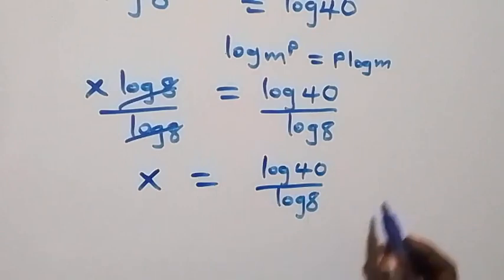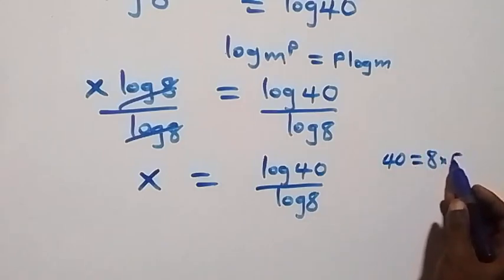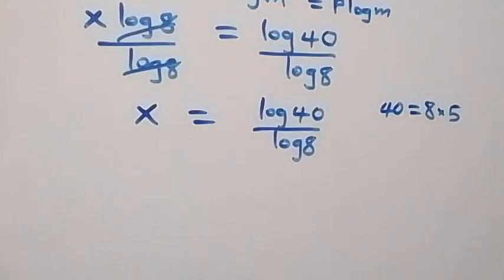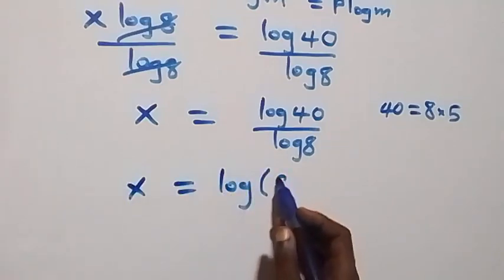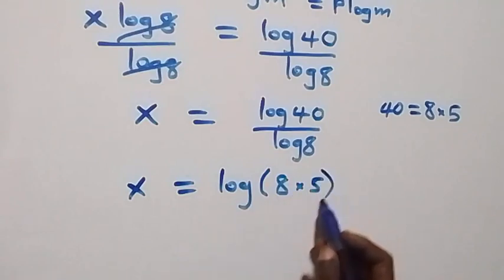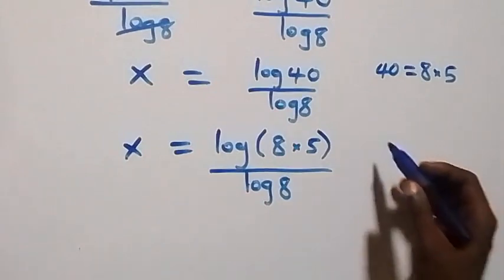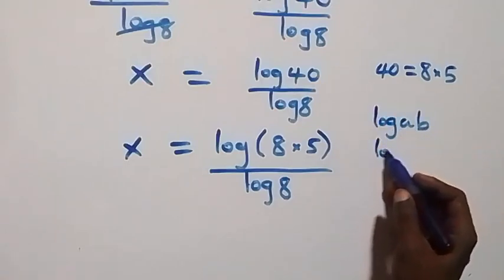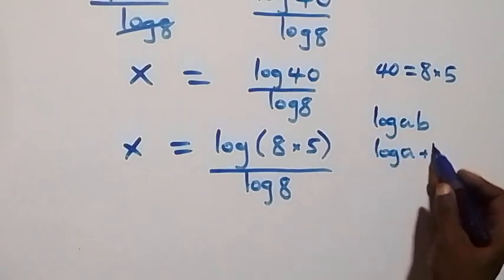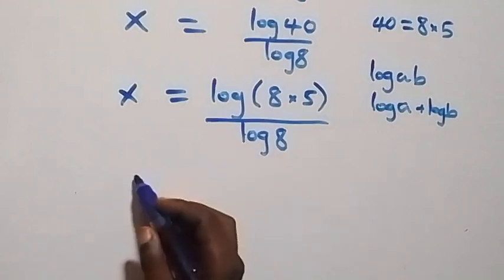Also, 40 can be written as 8 times 5, so what we have becomes x equals to log of bracket 8 times 5, over log 8. From the law of logarithm, log a times b is the same thing as log a plus log b.